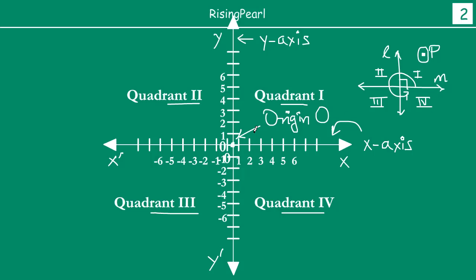We also noticed in our webisode two that from the origin, OX contains all the positive X values, and OX-dash contains all the negative X values. Similarly, if you go up from the origin, OY gives you all the positive values for the Y axis, and OY-dash gives you all the negative values for the Y axis.